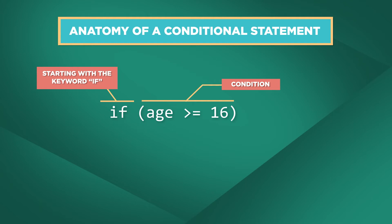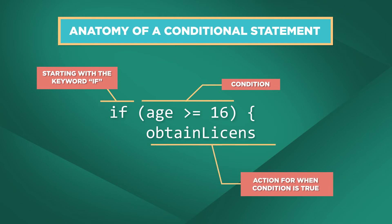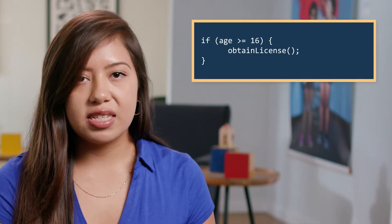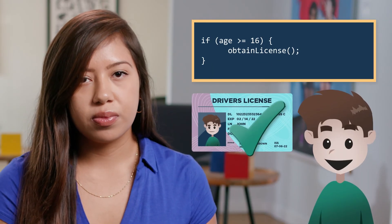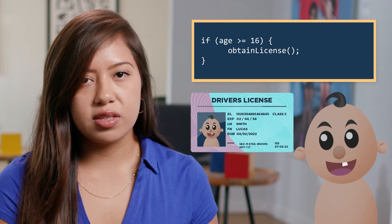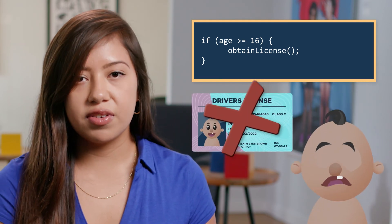In this case, we want to check whether or not someone is 16 or older. Secondly, we want to specify what should happen if the condition is true. Inside the curly braces, we write the code we want to execute if the condition is true — in this case, anyone over 16 will obtain a license. The code in the body of the IF statement will execute only if the condition is true. If the condition returns false, then no license is given.